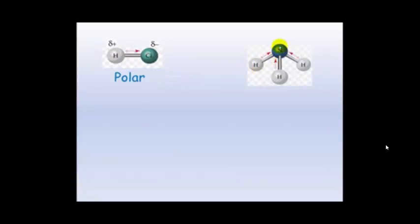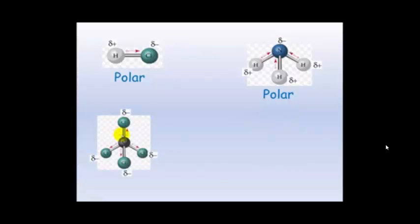Looking at examples: hydrogen chloride — the arrow indicates chlorine has the greater share of electrons and is most electronegative, so chlorine gets a delta negative and hydrogen gets a delta positive. With two different elements and an asymmetrical molecule, it must be a polar molecule. In ammonia, nitrogen has a higher electronegativity giving it a delta negative, while the hydrogens are delta positive. It is an asymmetrical molecule with a definite negative end and positive end, so it must be polar.